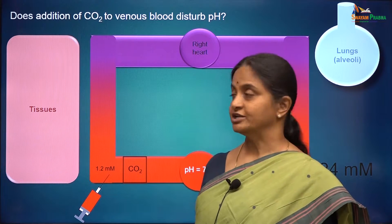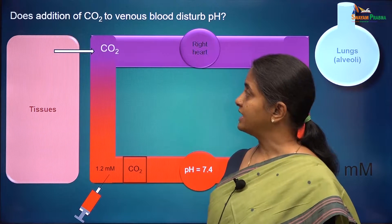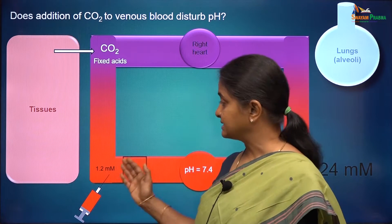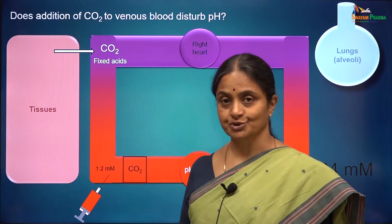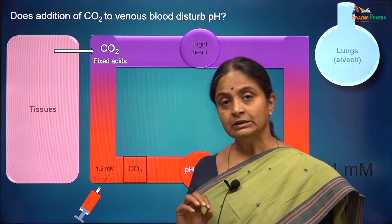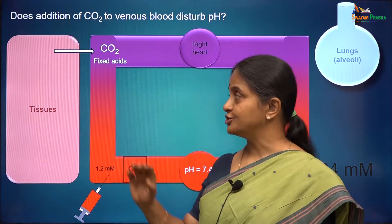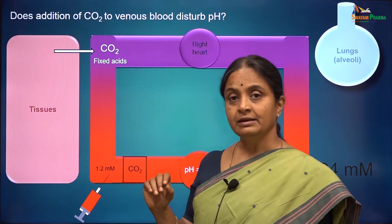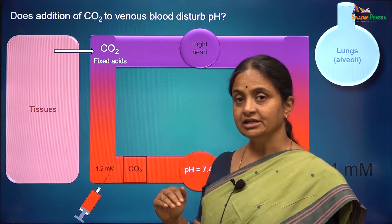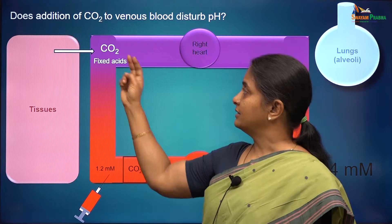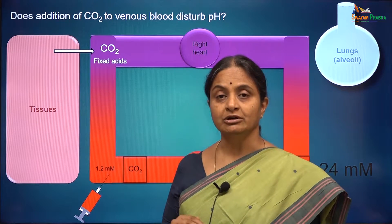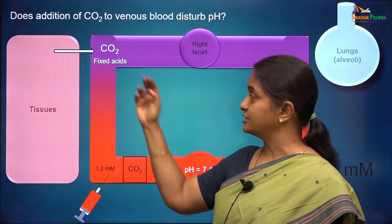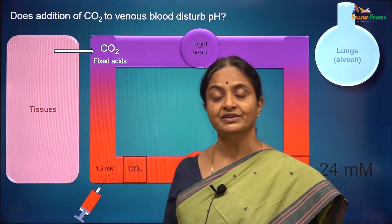In this session, we will take up the question of what happens with addition of acids to blood as it goes through tissues. The major output from tissues into venous blood is carbon dioxide. We will consider issues that arise due to addition of carbon dioxide to venous blood, and in the next session we will consider what happens due to addition of fixed acids.